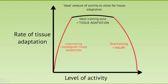It is important however that your body receives the right amount of exercise in order for this adaptation to occur. We've created a graph with the level of activity along one axis and the rate of tissue adaptation on the other. Not enough load doesn't allow for an ideal amount of adaptation, whereas too much exercise results in tissue injury. Therefore we want your body to stay in the ideal zone between under-training and overtraining to allow for this adaptation to occur.